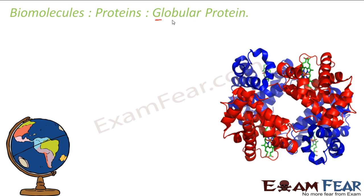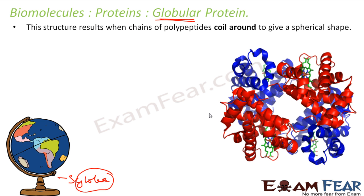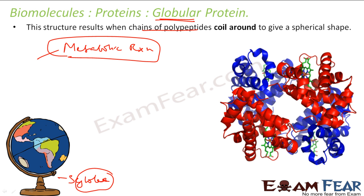The next is globular protein. The name comes from globe, because they look like a globe — all three-dimensional, spherical. They are water-soluble. This structure forms when chains of polypeptides coil around to give a spherical shape. For example, insulin. They have complex tertiary and secondary structure, and the final structure is like a globe. They have a role in metabolic reactions. Hemoglobin and enzymes are examples of globular proteins.